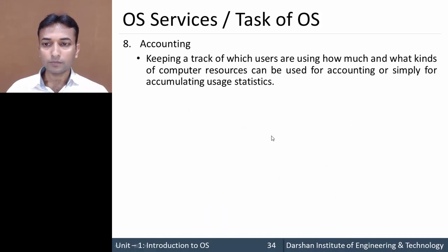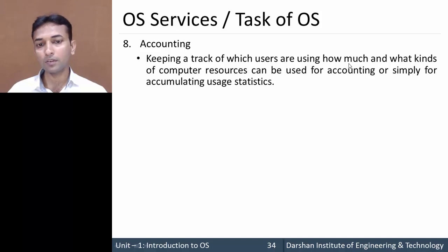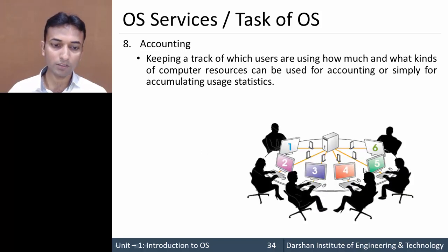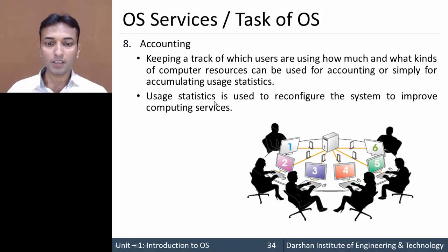Then there is accounting. This means the OS keeps track of which users are using how much and what kind of computer resources, and which resources are currently free. It continuously calculates how many resources are used by how many users and for what purpose. For example, with six users sharing different resources, the OS tracks who is using which resource. These user statistics are used to reconfigure the system to improve computing service.